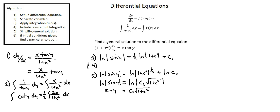Notice we aren't given initial conditions in this example, so we didn't complete algorithm step 6. If we're given initial conditions, instead of finding a family of functions we find a particular function as a solution. We'll look at using initial conditions to find a particular solution of a differential equation in our next lesson.